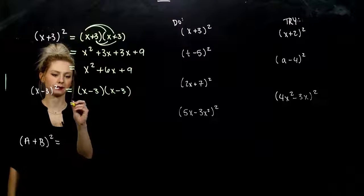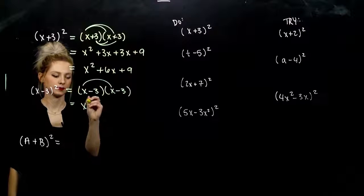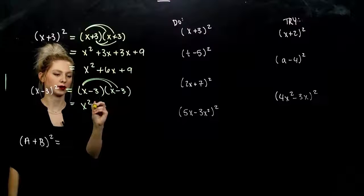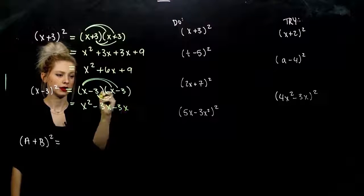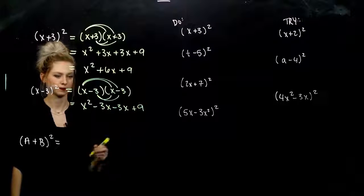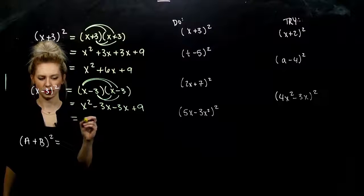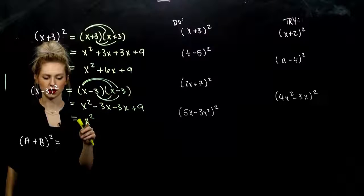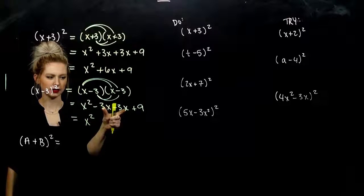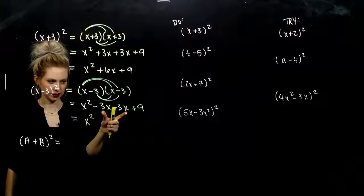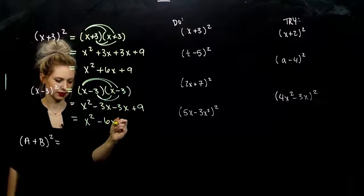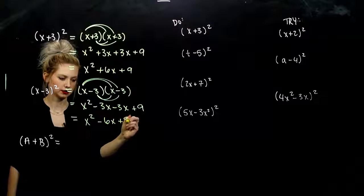FOILing out, what are we looking at? First, outer, inner, and last. Again, what happens? I get the first one and it's squared, and I get two of both of these factors, two of this factor. I get both negative 6X and plus 9.